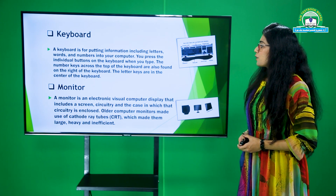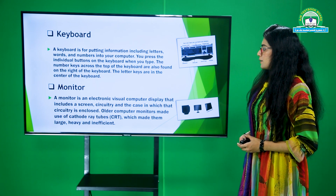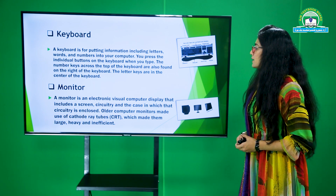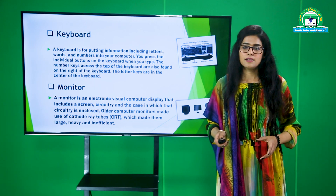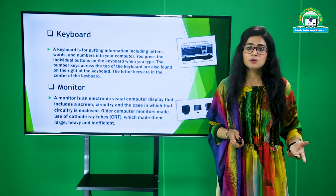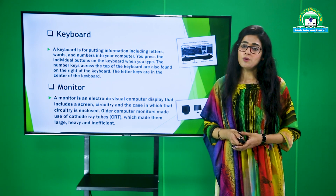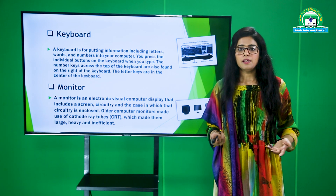Next humare paas device hai keyboard. A keyboard is for putting information including letters, words and numbers onto your computer. You press the individual buttons on the keyboard when you type. The number keys across the top of the keyboard are also found on the right side of the keyboard. The letter keys are in the center of the keyboard. Keyboard bhi ek aisi device hai jis se hum text likh sakte hain, numbers press karte hain. Iske andar arrow keys, functional keys, alphabets, aur numbering maujood hoti hai. Ye device computer use karne ke liye bahut important hai.